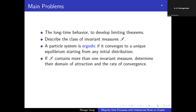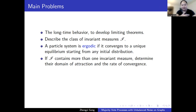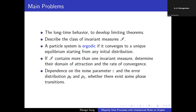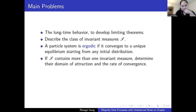The graph is infinite, though results apply to finite graphs trivially since those are finite-state Markov processes. If the class of invariant measures contains more than one element, we also want to determine the domain of attraction and rate of convergence. The majority vote process has two parameters: the noise parameter ε (probability for an event point to be noise) and the noise distribution (p₀, p₁ at noise events), both of which play a role in phase transitions.